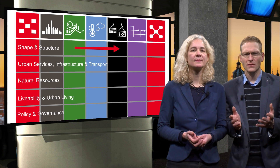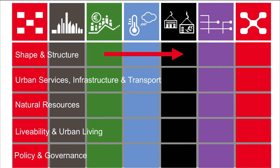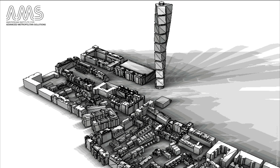Now let us look at the themes. As a reminder, they represent different areas of expertise, or you may say different lenses through which to see the world. The first theme is shape and structure. This describes the physical layout of the city — in more scientific terms, the urban morphologies and topologies.